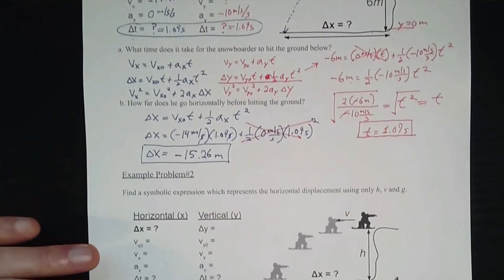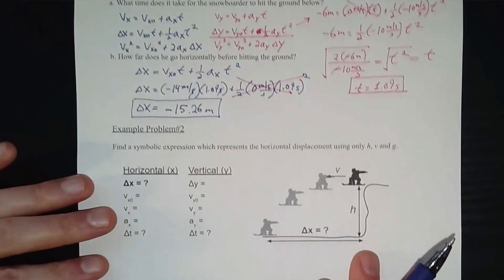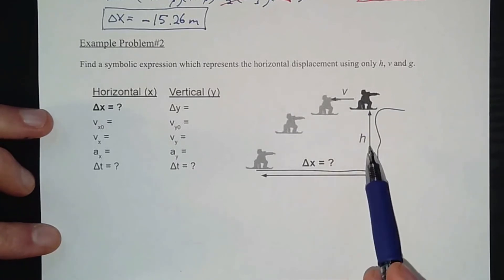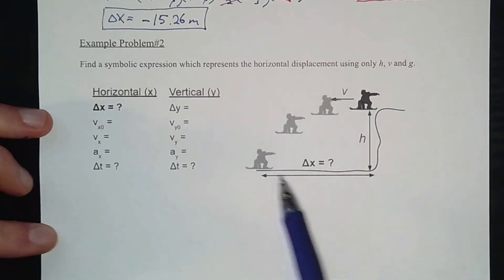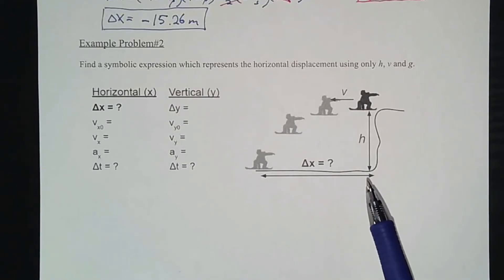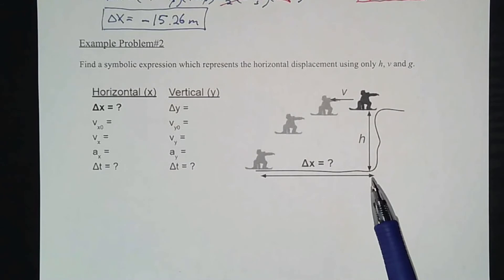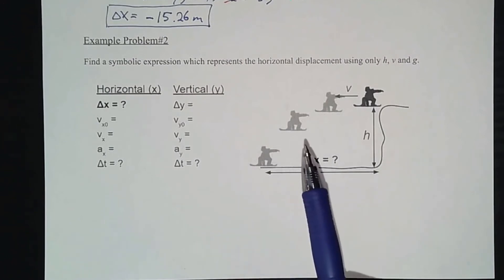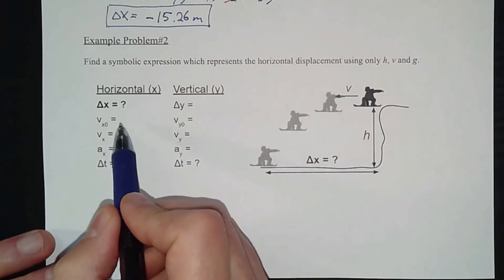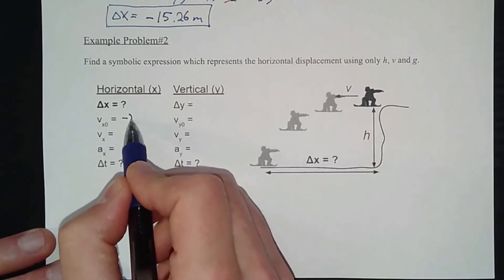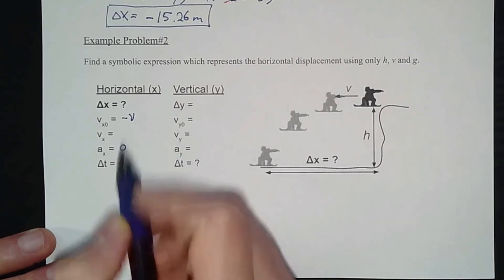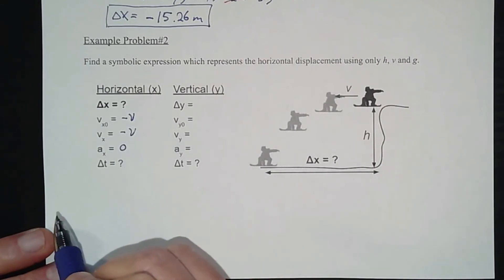For AP Physics 1, we now solve the same problem symbolically. The snowboarder has an initial velocity v at some initial height h, and we want a symbolic expression for total displacement. For the horizontal direction: initial velocity is −v, horizontal acceleration is zero, so final velocity is also −v, and time is unknown.